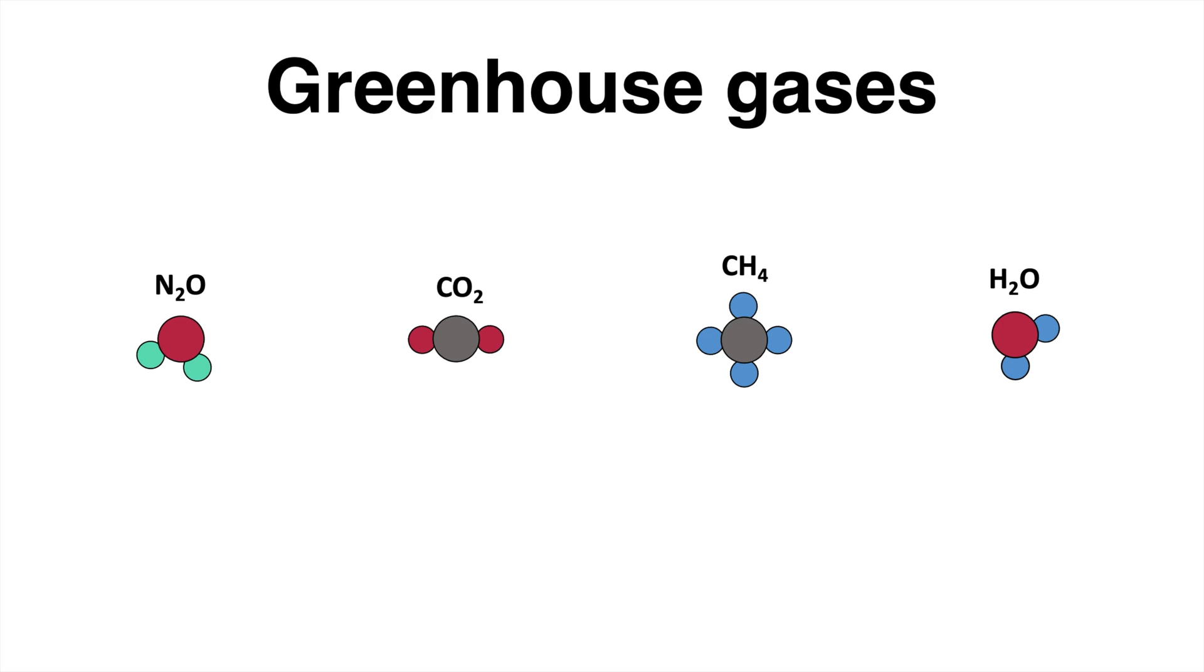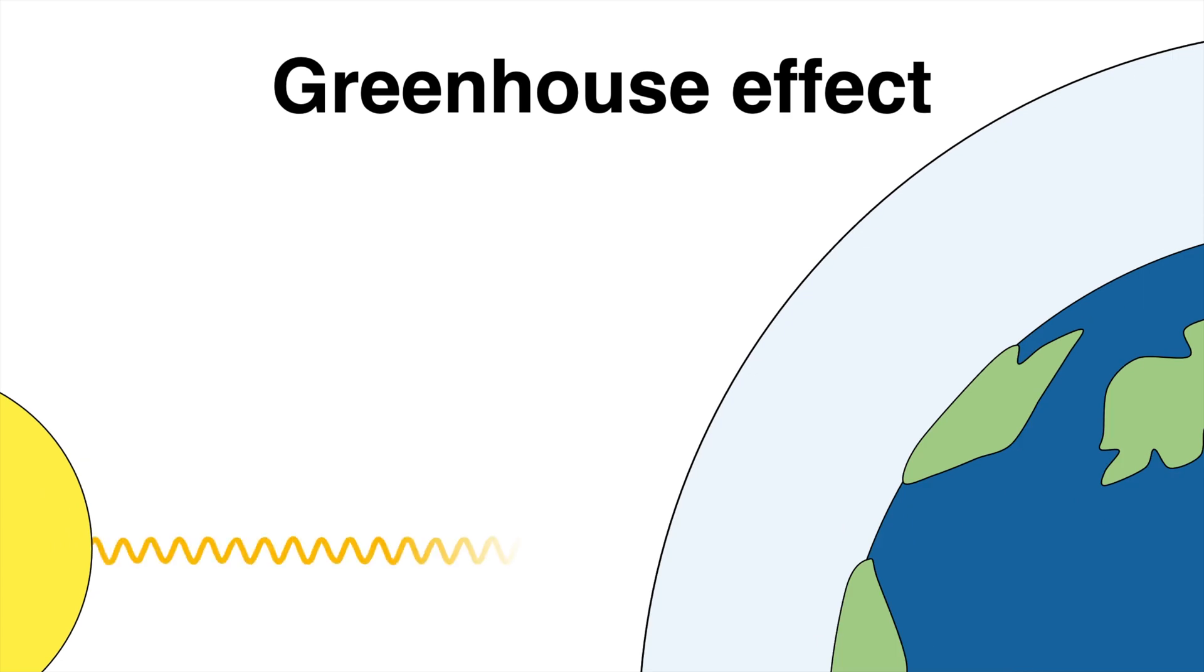How exactly are these gas molecules involved in heating up the atmosphere? Solar radiation has a short wavelength that means high energy radiation. The radiation from the sun partly penetrates the atmosphere and reaches the planet's surface which is warmed up.